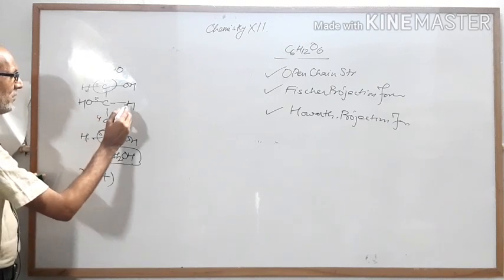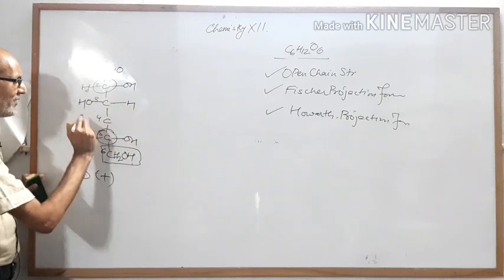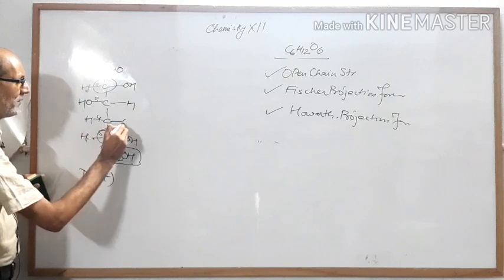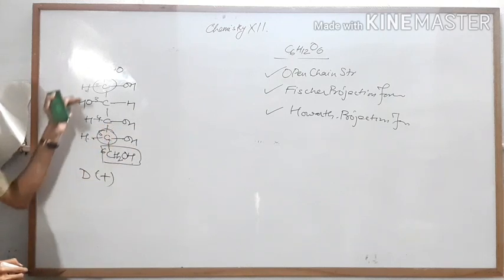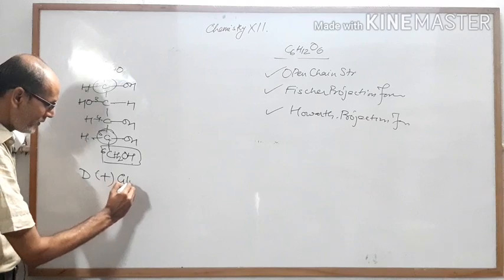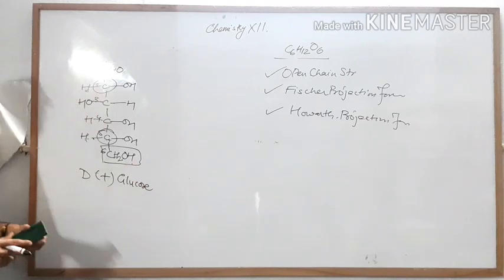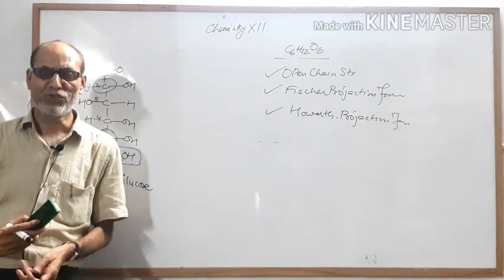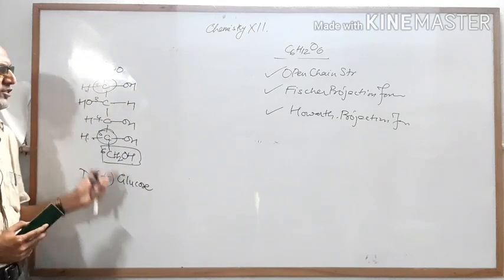Reverse the direction of hydrogen again and you have got D-plus glucose. At Class 12 level we draw the D-plus glucose structure.